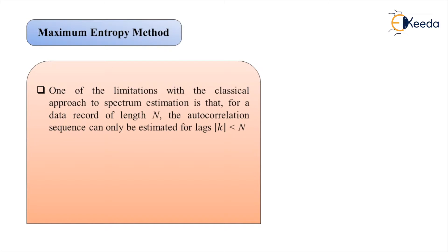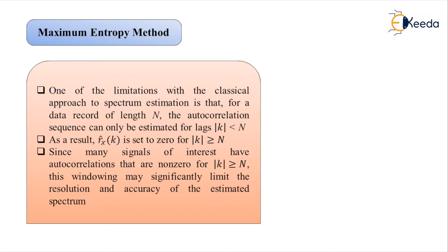Because of this result, the estimate of the autocorrelation sequence, denoted r̂_x(k), is set to zero for all values of |k| ≥ N. Many signals of interest have autocorrelations that are non-zero for this range |k| ≥ N, which may result in limitations of resolution and accuracy of the spectrum estimation.